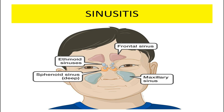The next condition is sinusitis. Sinuses are moist air spaces within the bones of the face around the nose. When sinuses swell or become irritated, the infection is called sinusitis. Different sinuses include frontal, ethmoidal, sphenoid, and maxillary sinuses. Sinusitis occurs when a cold or allergies cause the nasal passage to swell and produce more mucus, blocking sinus drainage so that mucus is trapped, leading to growth of bacteria, viruses, or fungi.